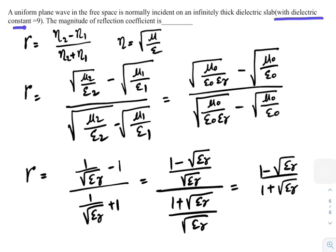The dielectric constant is given, that is 9. I can substitute 9 in place of epsilon r. Therefore, gamma equal to 1 minus 3 by 1 plus 3, that equal to minus 2 by 4, that is equal to minus 0.5.